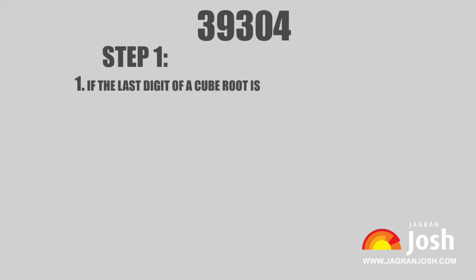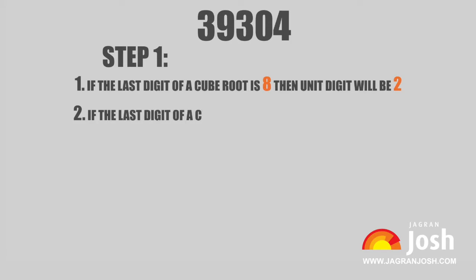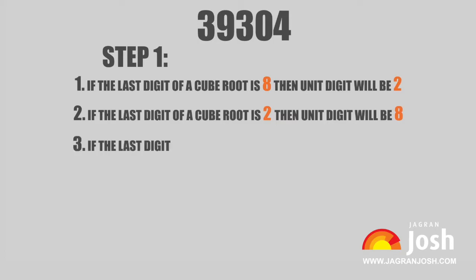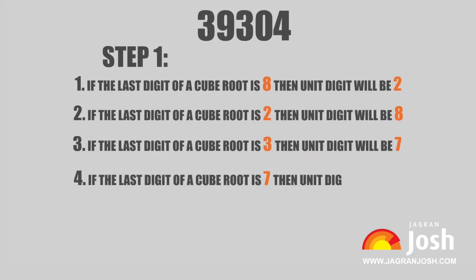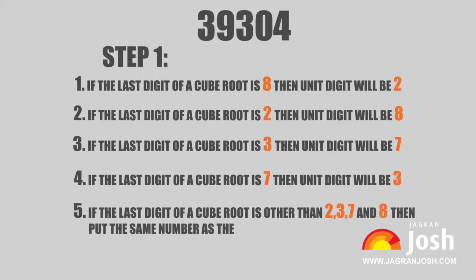Step 1: To find the unit place of the cube root, always remember the following points. If the last digit of a cube is 8, then the unit digit will be 2. If the last digit is 2, the unit digit will be 8. If the last digit is 3, the unit digit will be 7. If the last digit is 7, the unit digit will be 3. If the last digit is other than 2, 3, 7, and 8, then put the same number as the unit digit.